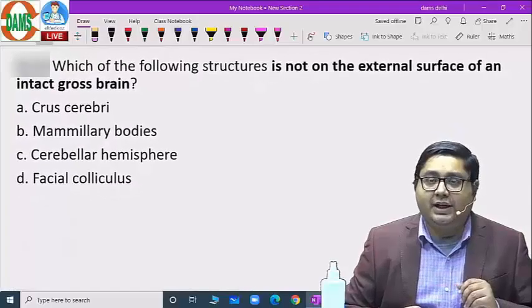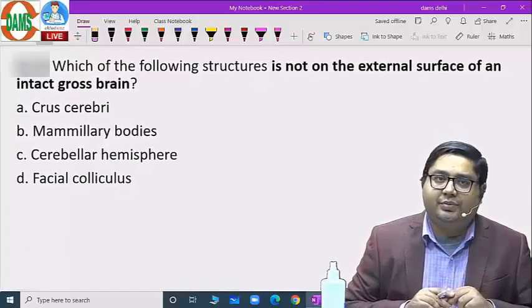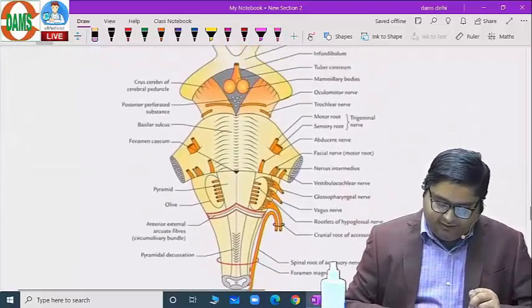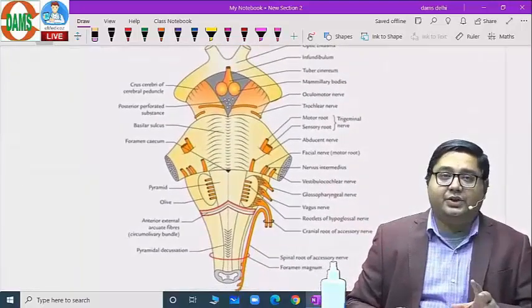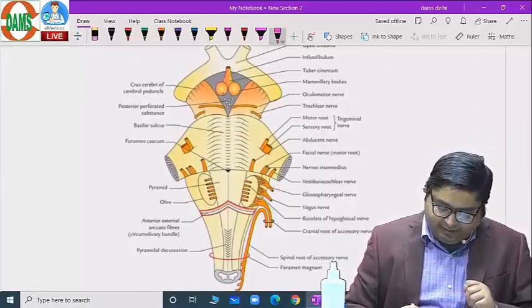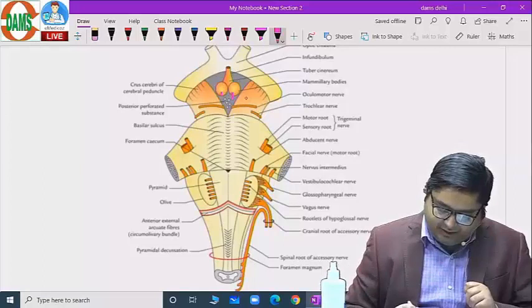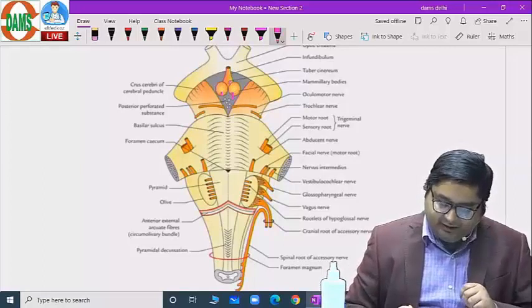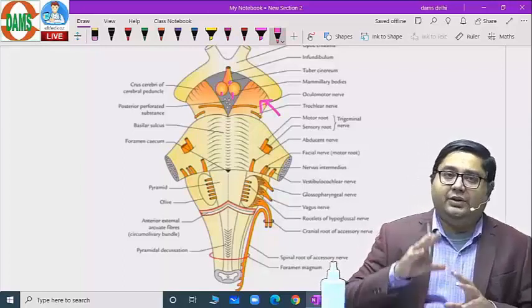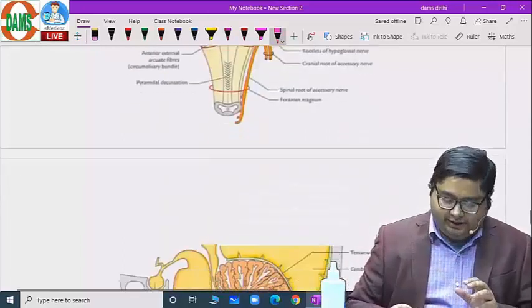Which of the following is not on the external surface of the intact gross brain? Let us look at the brain structure here. When we look at the gross brain structure we can see the mammillary bodies, the tuber cinereum, and the crus cerebri. This is crus cerebri, which is seen on the gross part when you look at the brain from this aspect.